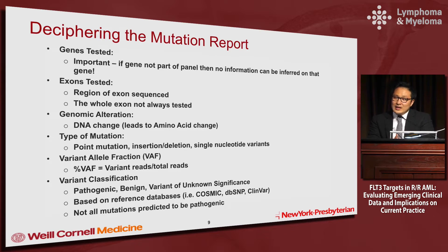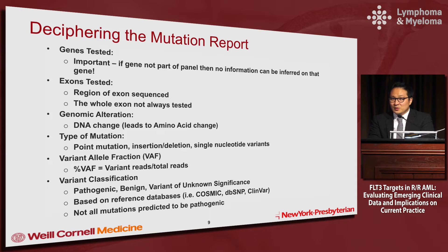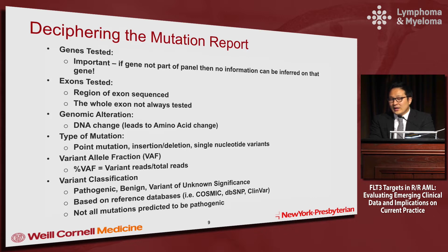The exons tested tell you what part of the gene is covered. A lot of times testing doesn't cover the entire gene — it covers hotspots commonly found to have mutations. If you're looking for a rare mutation outside that region, you may not have information. The genetic alteration gives you the DNA change and often the amino acid change. Different kinds of mutations include point mutations with one amino acid change, insertions and deletions of chunks of a gene, or single nucleotide variants which may not matter as much.